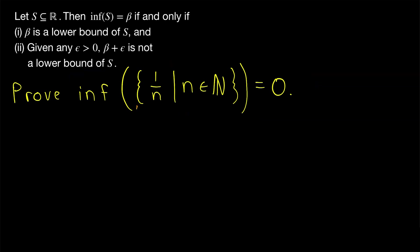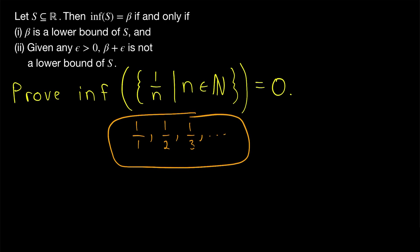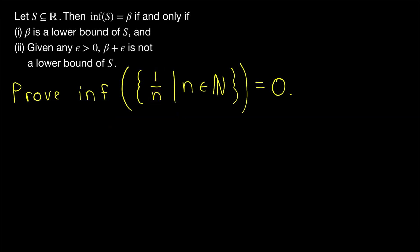Quickly, just some intuition — why would we think the infimum of this set is equal to zero in the first place? Well, if we write out some of the elements of this set, they're just reciprocals of natural numbers. For larger values of n, it's pretty clear that the elements are getting closer and closer to zero. However, they'll never be negative since it's always just one divided by some natural number. So we suspect that the infimum, the greatest lower bound, is zero. Let's go ahead and prove it.